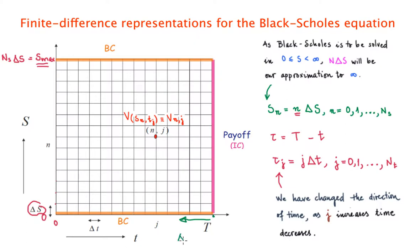Working with this new variable tau, we also have to discretize the time axis. We define a time step delta-t, and the number of time steps is N_T, where delta-t equals T divided by N_T. Any specific time in the tau variable is then tau_j equals j times delta-t, where the index j runs from zero to N_T.